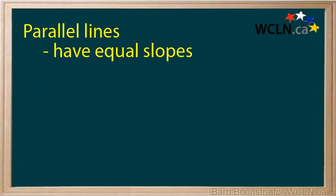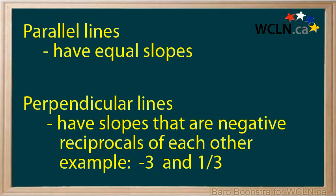In summary, parallel lines have equal slopes. Perpendicular lines have slopes that are negative reciprocals of each other. For example, negative 3 and positive one third. These two facts become important when you continue to work with linear equations.